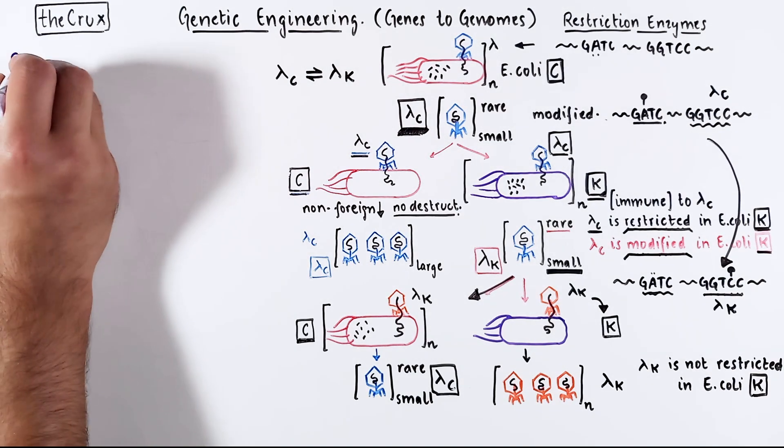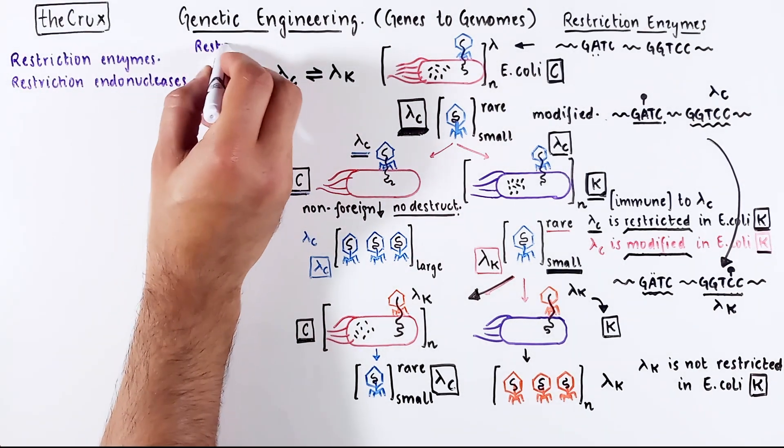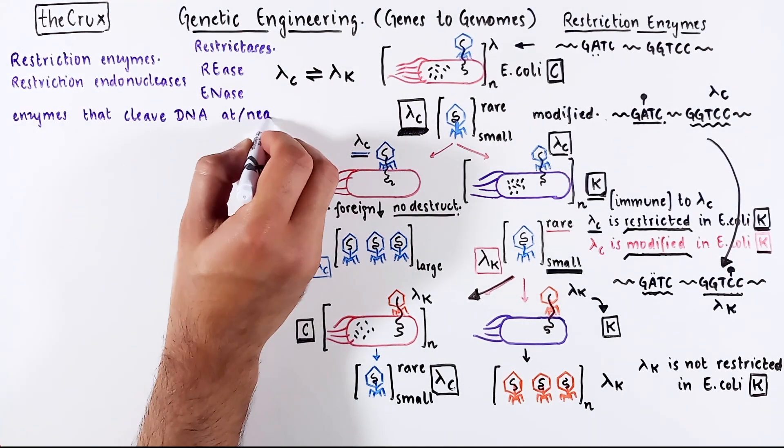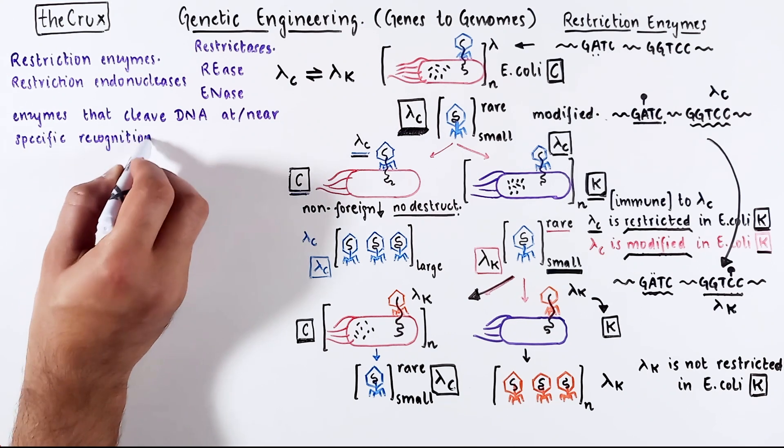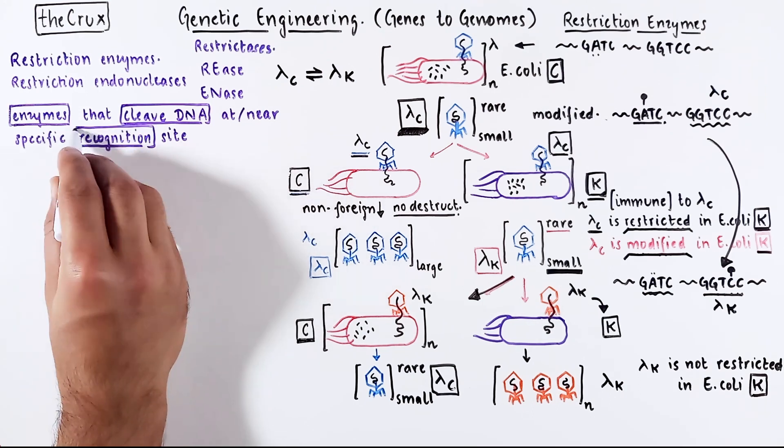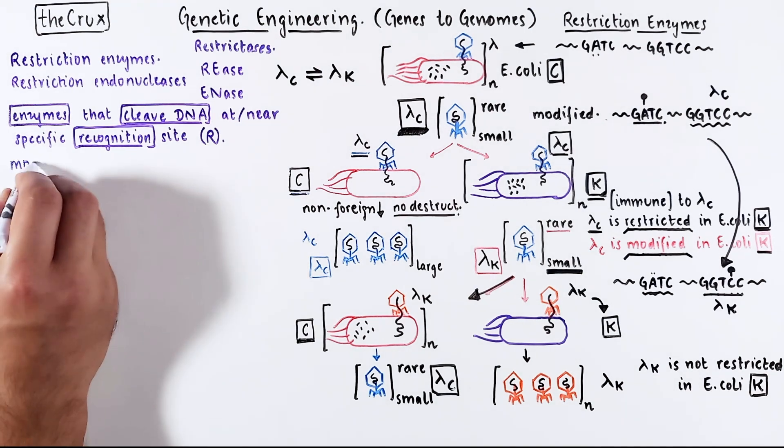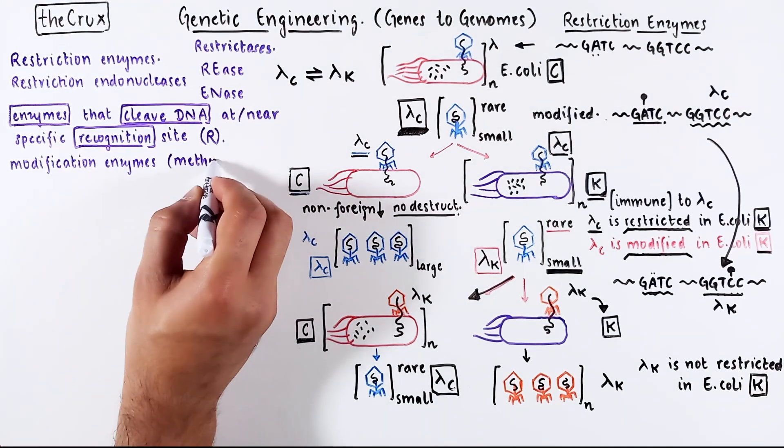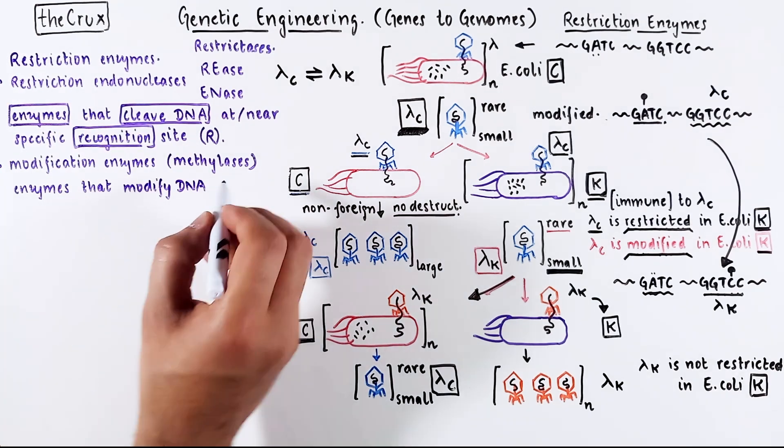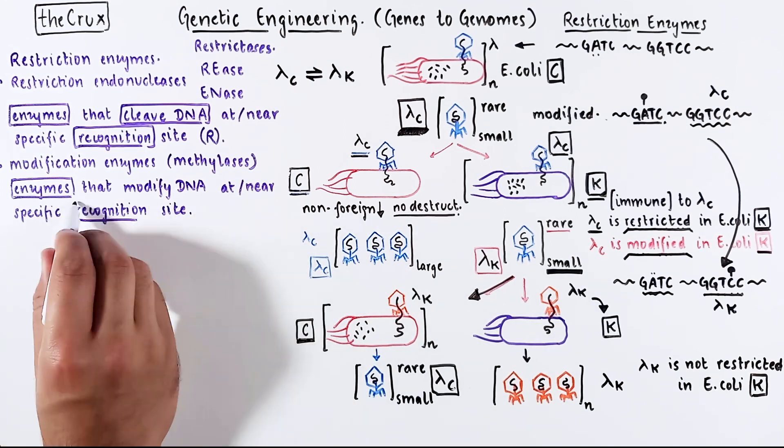Alright, now let's give formal definition to a couple of terms. The restriction enzymes or restriction endonucleases, and you have many abbreviations for them, are enzymes that cleave DNA at or near a specific recognition site. There are three key things to note. Usually restriction enzymes are denoted by a prefix R, at least technically. We will circle back to this later. The modification enzymes are methylases or methyltransferases. These are enzymes that modify DNA at or near a specific recognition site, and they usually have a prefix M.